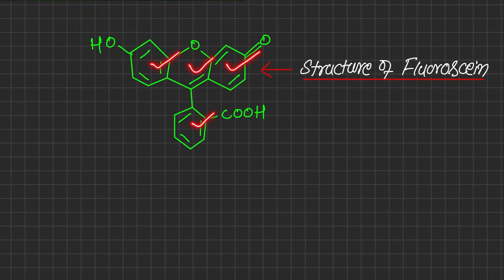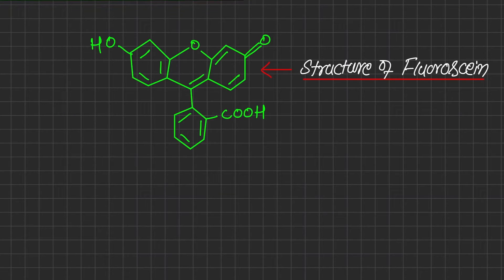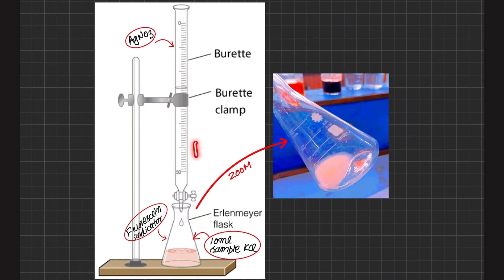This is the structure of fluorescein. There are fused rings in this structure and heteroatoms are also present. The fusion of rings induces extension of conjugation, and the presence of heteroatoms extends this conjugation further. All these features favor fluorescein to glow, which is why this fluorescein indicator is also called a dye — because it glows and produces the fluorescence phenomenon.